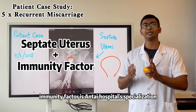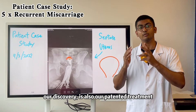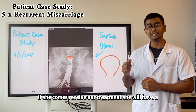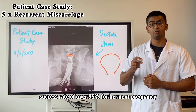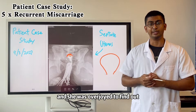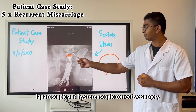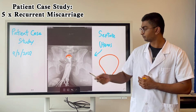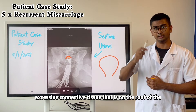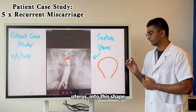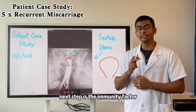The immunity factor is Antihospital's specialisation — it is also our discovery and our patented treatment. If she comes and receives our treatment, she would have a success rate of over 95% for her next pregnancy. She was overjoyed to find out. We recommended that her next step is laparoscopic and hysteroscopic corrective surgery — simply to remove this excessive septal tissue on the roof of the uterus, reshaping it properly. With that shape, she has a very high success rate.